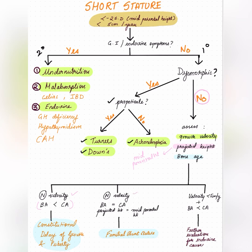If growth velocity is normal and bone age equals chronological age — meaning the child is not developmentally lagging — and the projected height falls within the mid-parental height range, then the diagnosis is familial short stature.